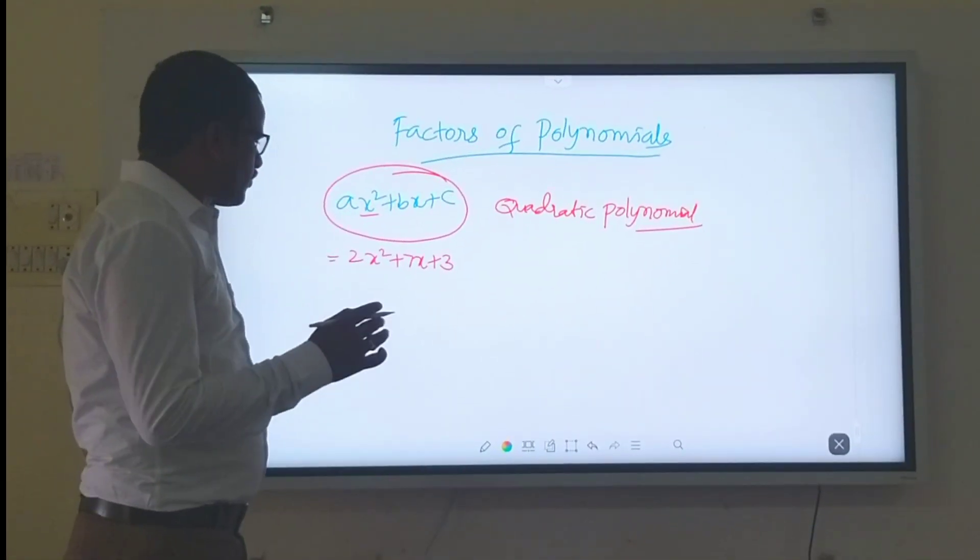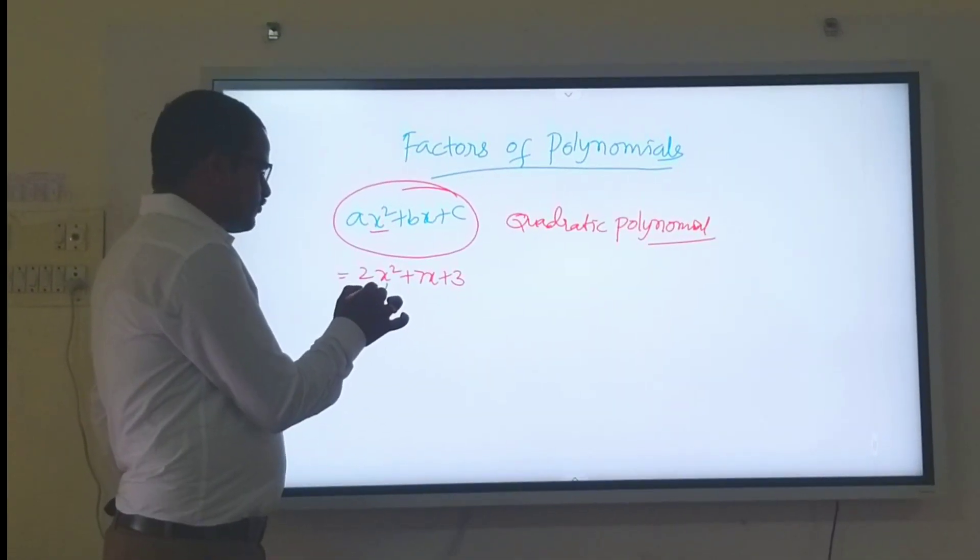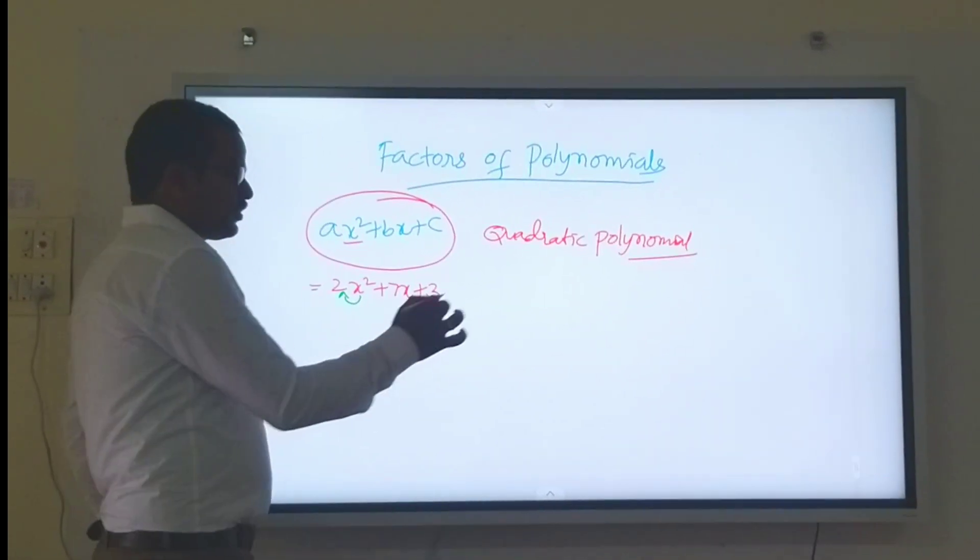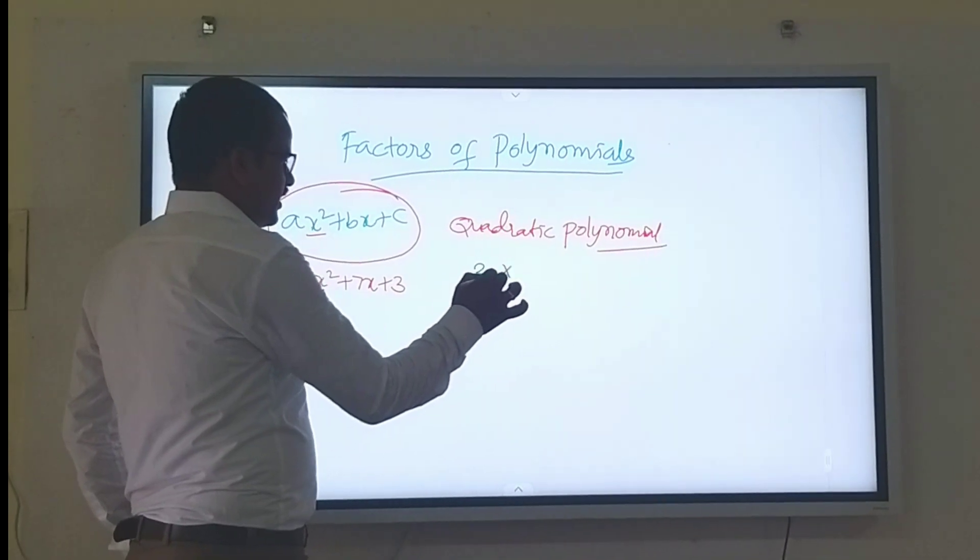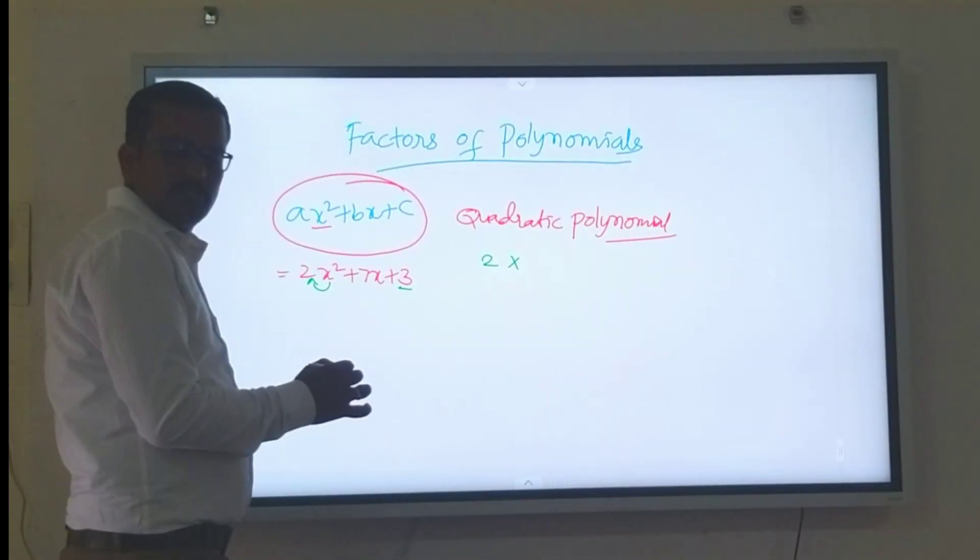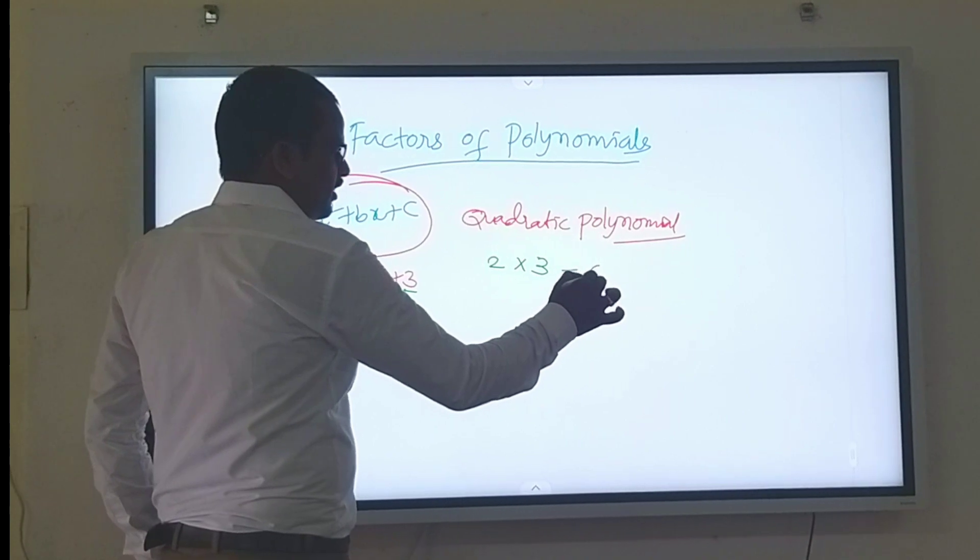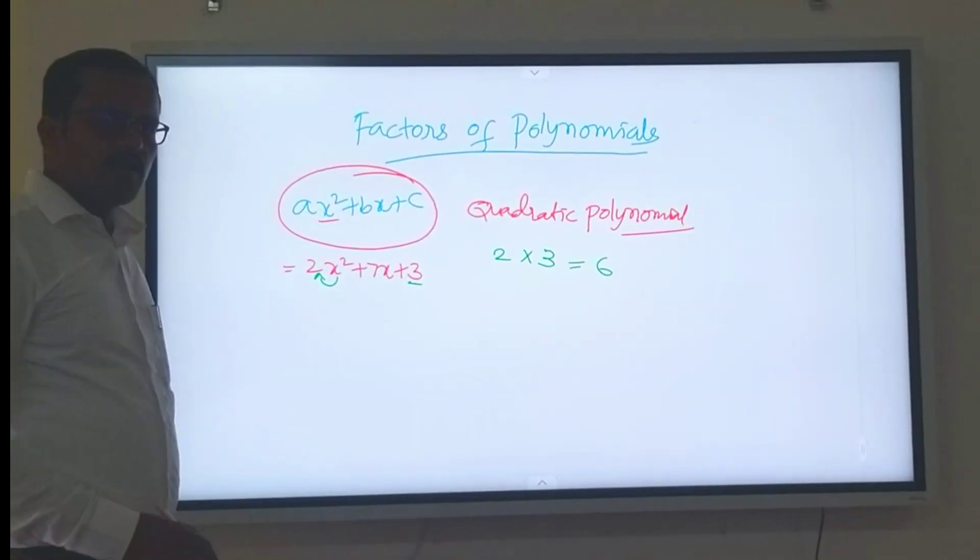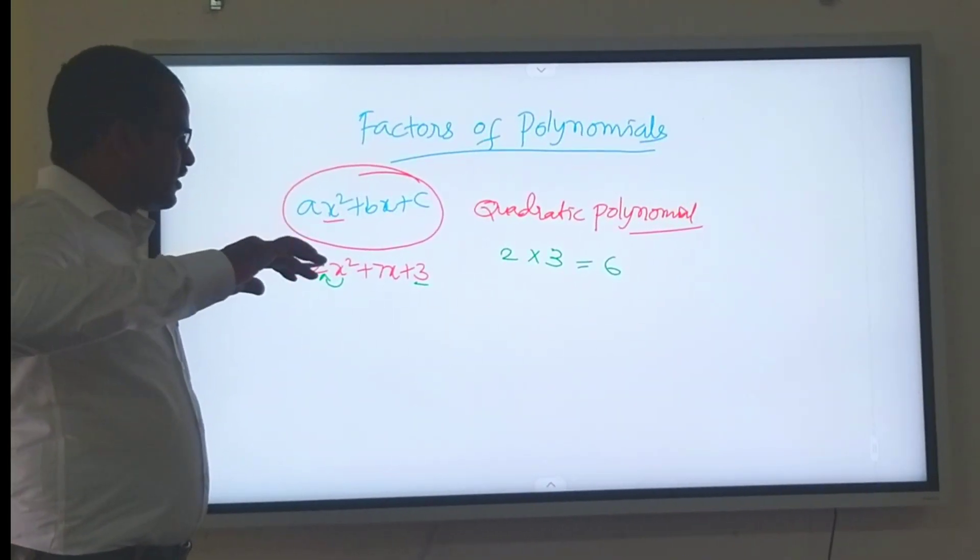Here, first we have to observe. What is the x-squared portion here? 2. And then, what is the constant here? 3. What is the value of 2 into 3? 6. Now, consider the next step.